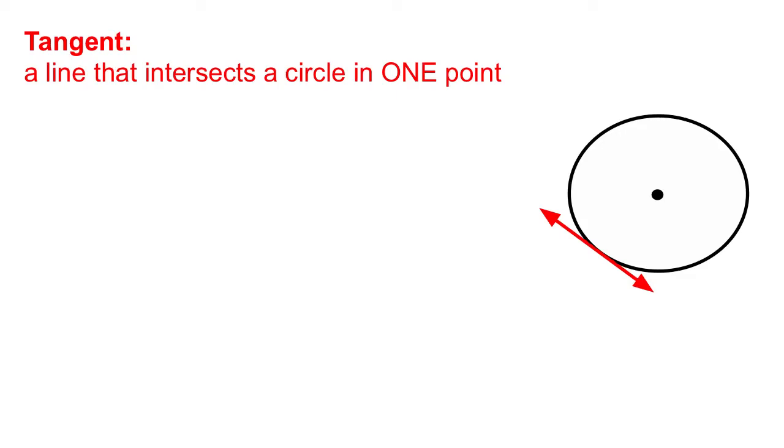In this video we're going to talk about the tangent radius theorem. First, let's review what a tangent line is. A tangent line is a line that intersects a circle in one point. You can see in this example that this red line intersects the circle right here in this one point.